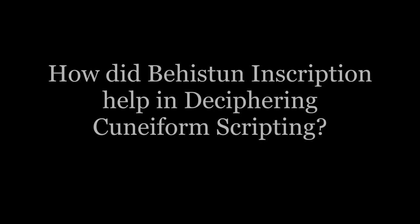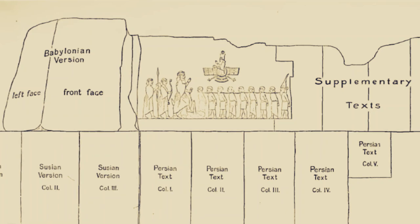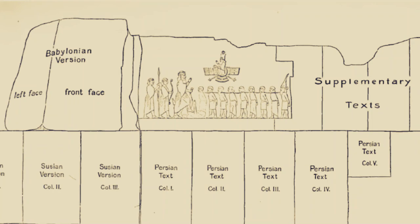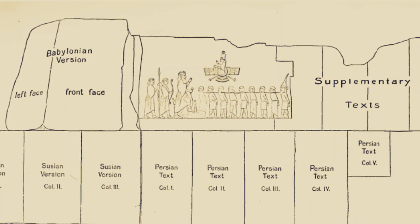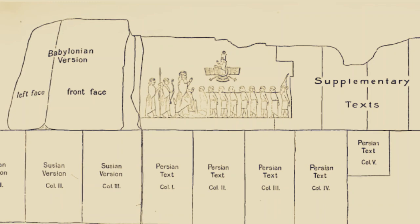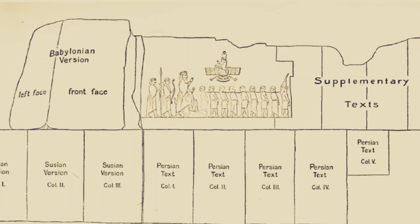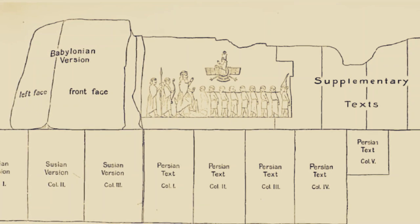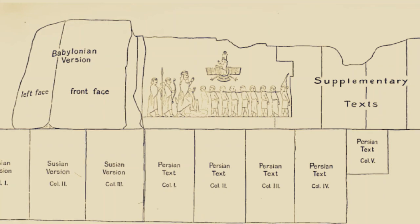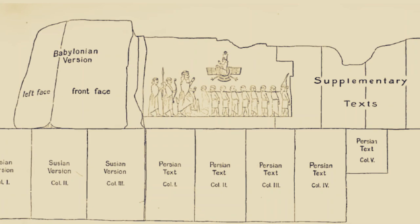How did the Behistun inscription help in deciphering cuneiform script? This sculptured panel has five columns of cuneiform text in the Old Persian language recording the suppression of the revolts. To the left of the Persian inscription are three columns in the Elamite character containing a translation of the first four Persian columns. Above the Elamite version is a single column in the Babylonian character and language, also containing a translation of the first four columns of the Persian text. Since the Elamite and Babylonian cuneiform texts are copies of the Persian text, once the Persian text is deciphered, it becomes easy to decipher the other two.